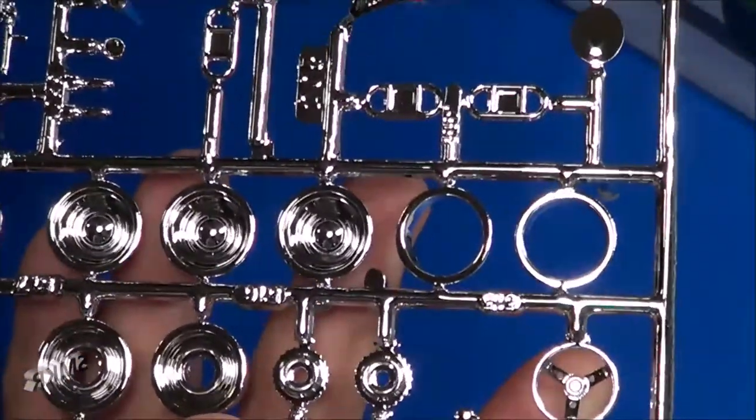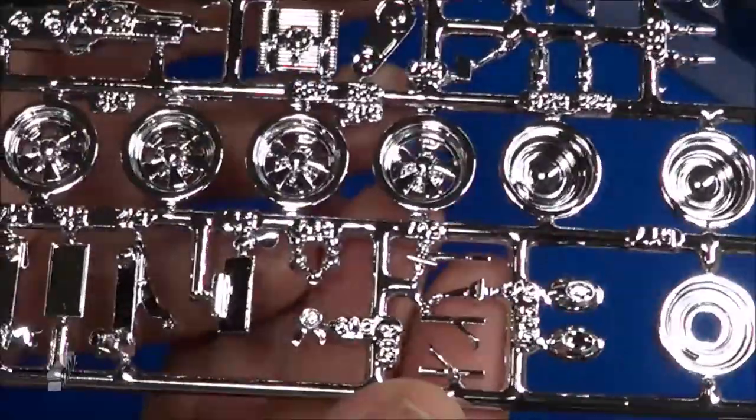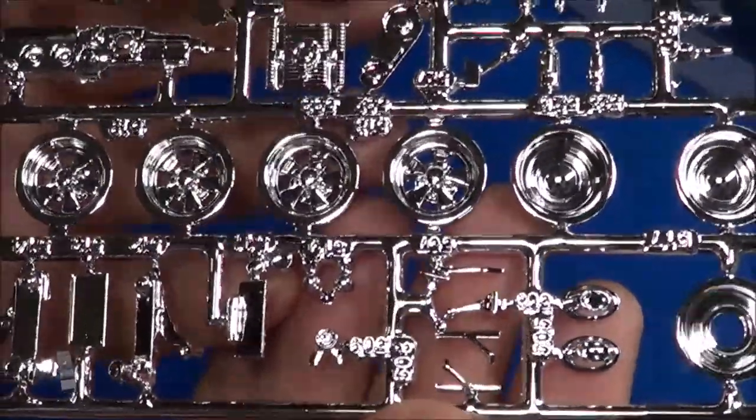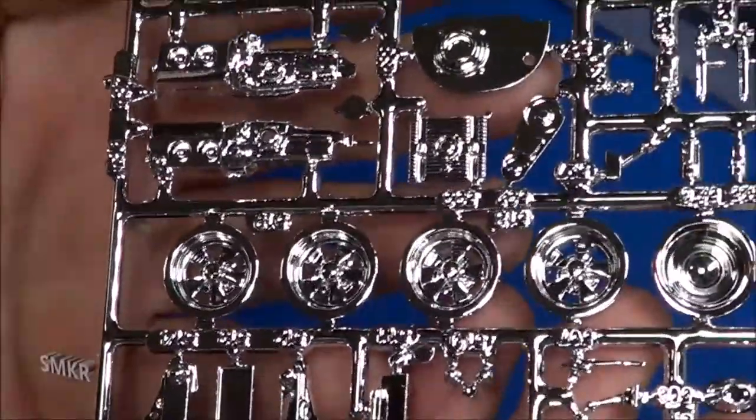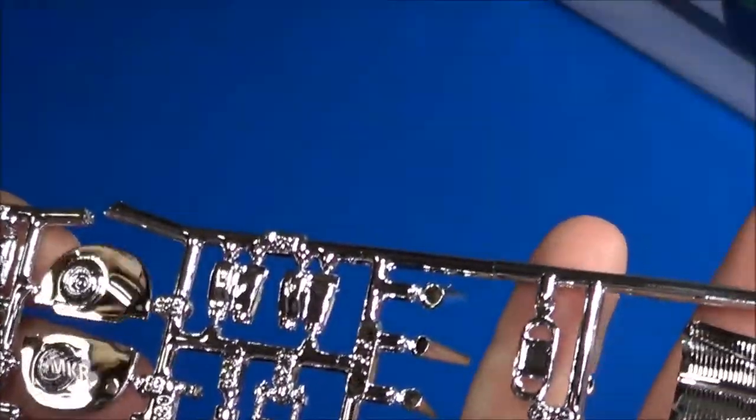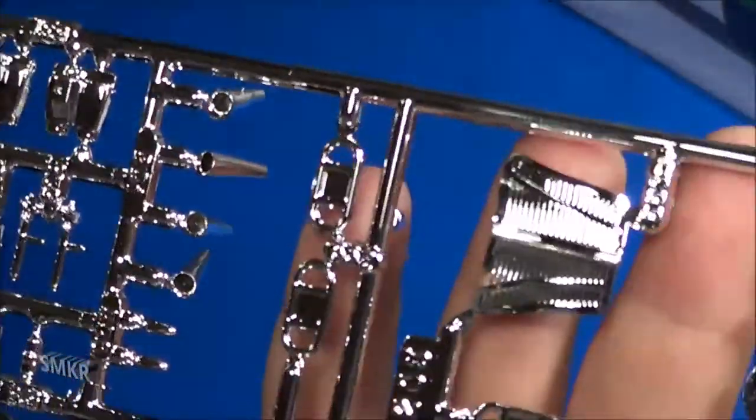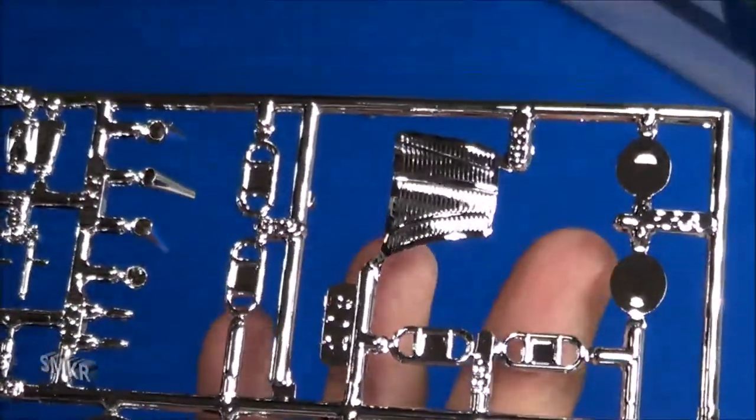Chrome steering wheel, tail light assemblies, some exhaust parts. And we actually have the grill for the Streetle Beetle, so that's telling me this is the same chrome tree that's found in that kit.